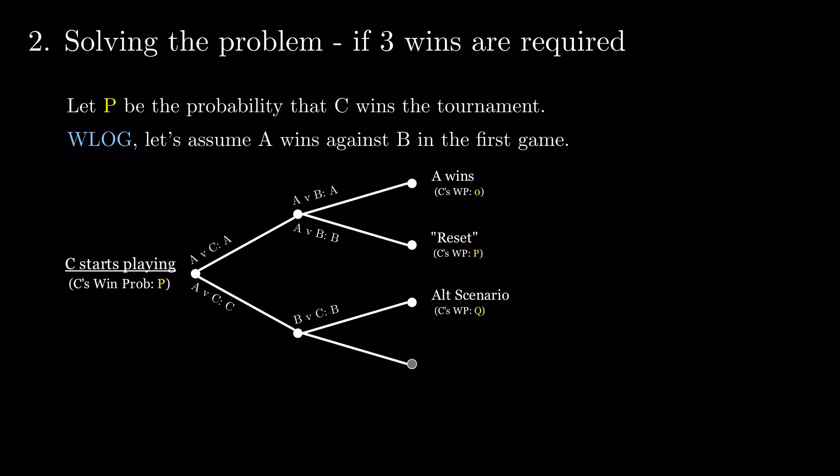Conversely, if C wins his first two games, and then the third, he becomes the winner with probability 1. If he loses the third match, we are again at the alternative scenario.